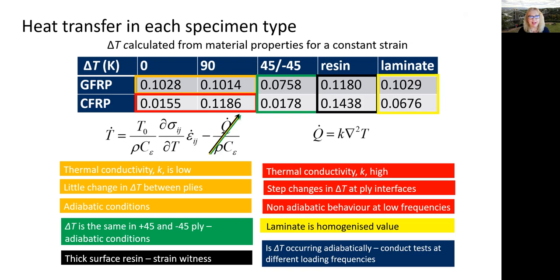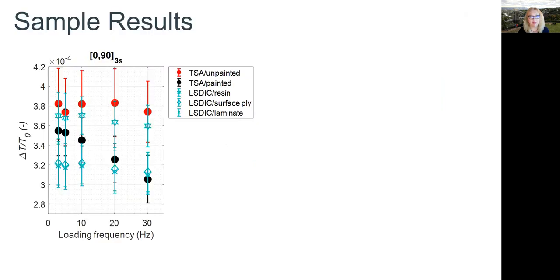In my last slide today, I'm going to show you some sample results. This is for the glass fiber lamina, and we can see for our unpainted response, there is a constant response across the loading frequencies, which indicates adiabatic behavior is occurring. Interestingly, we painted some of our specimens on the peel ply side, and this resulted in a very thick layer of paint. And you can see, as we increase the loading frequency, the response goes down. This is expected.